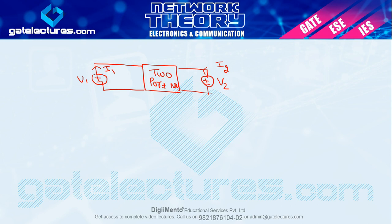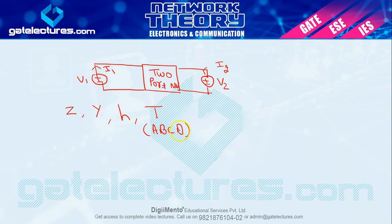For two-port network analysis, we need to use some parameters: Z parameter, Y parameter, H parameter, T parameter (also called ABCD parameter), G parameter, and ABCD inverse parameter. We have a total of six parameters to study for two-port network analysis.